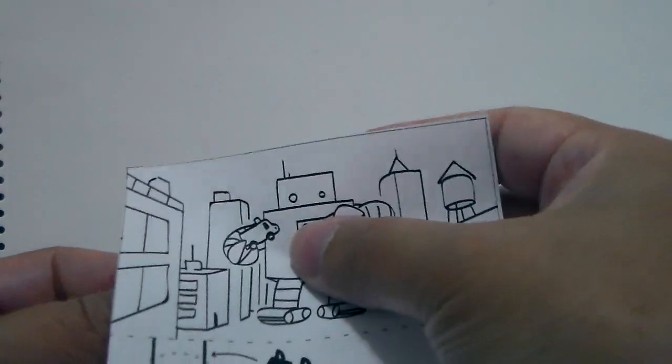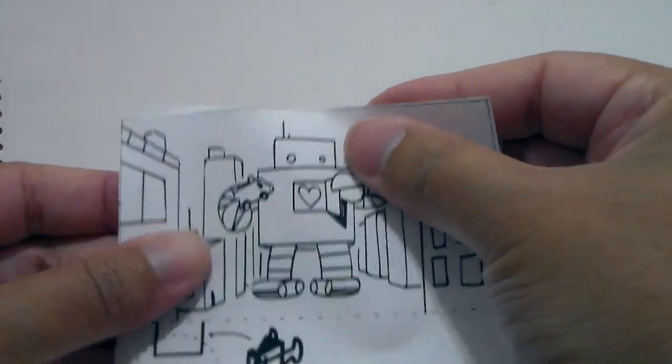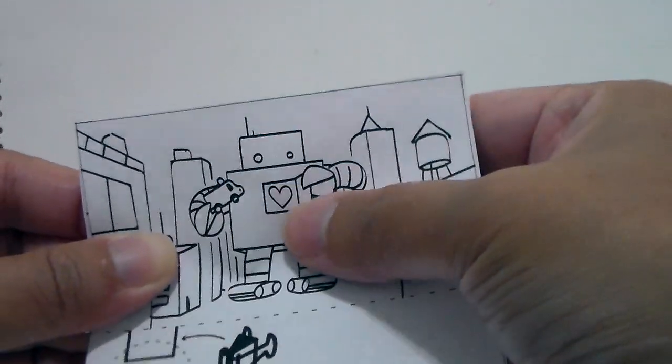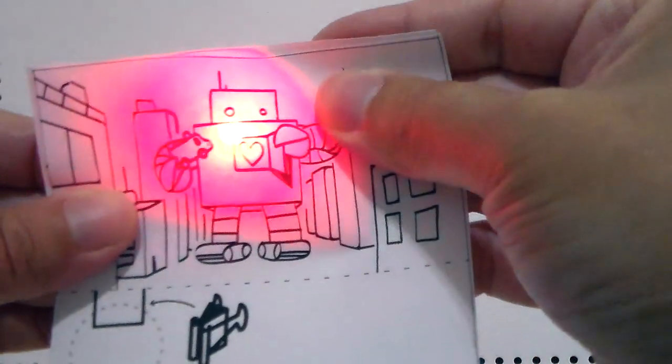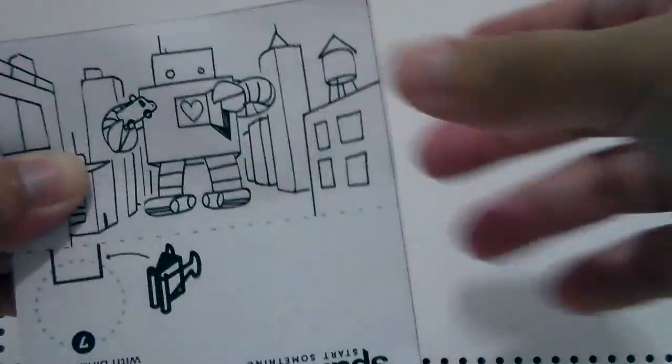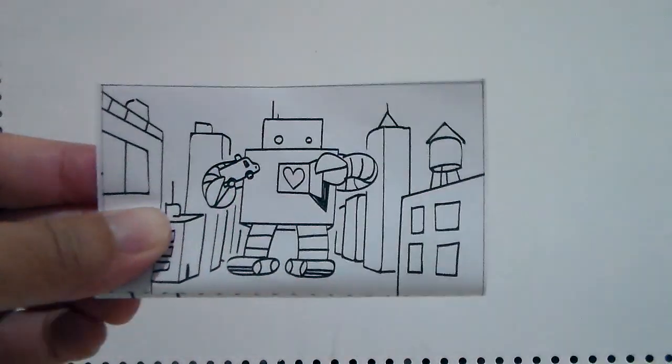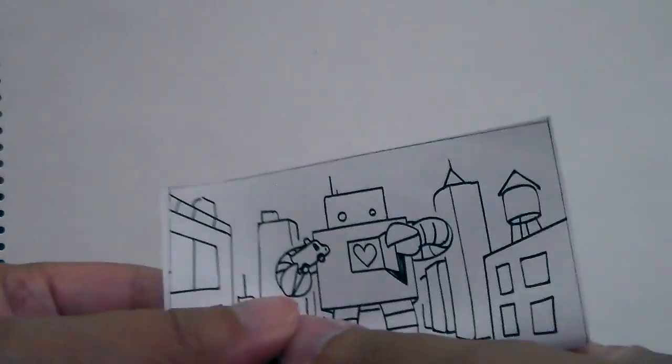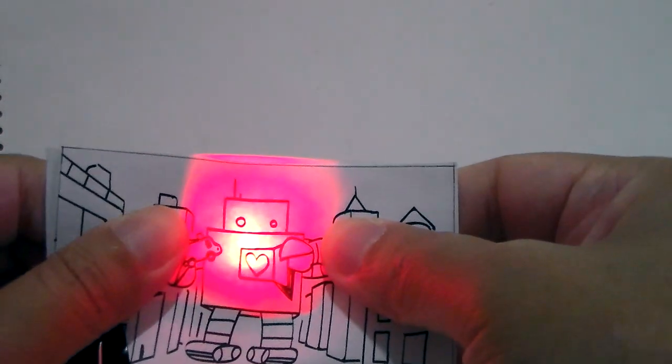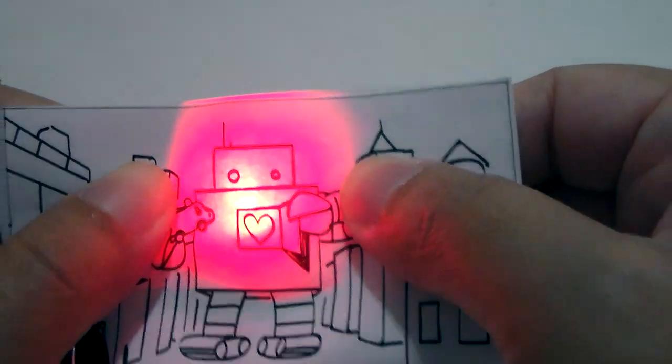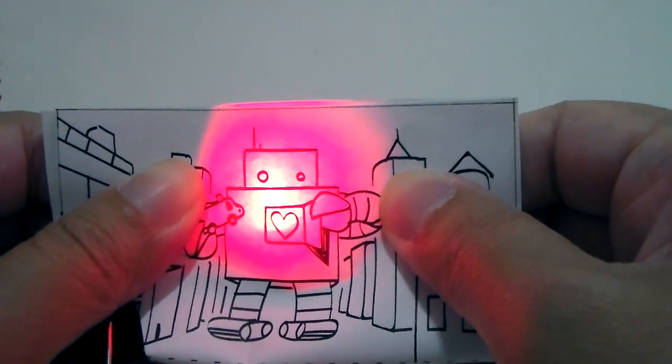And then now, what you want to do is you take the robot that you just made, or you can color it too if you like, and mine is just plain. So like that. And then this is what the binder clip comes in handy. So you, it can be a little bit tricky sometimes. So like that, should be doing. So you have a robot with a bright heart.